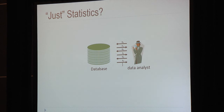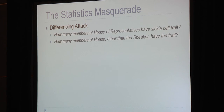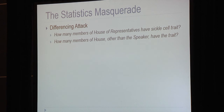What if the analyst is restricted to just asking statistical queries? Consider the very simple differencing attack. The first question is: how many members of the House of Representatives have the sickle cell trait? Somehow the intuition is that the answer doesn't leak information about any individual. But if you pair it with another question — how many members of the House, other than the Speaker of the House, have the sickle cell trait? — if you have the exact answer to both, you can take the difference and figure out the status of the Speaker.